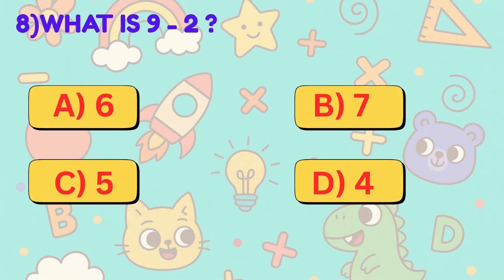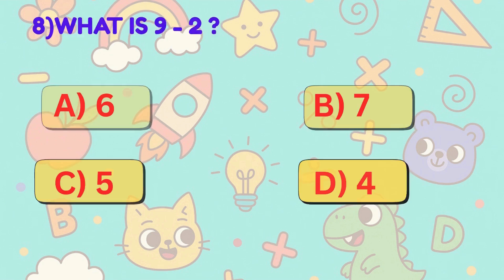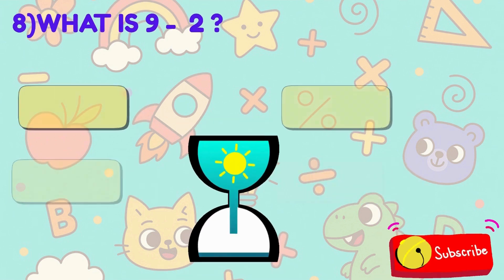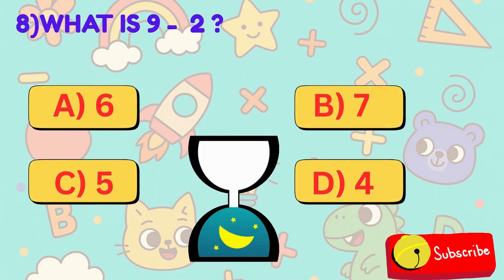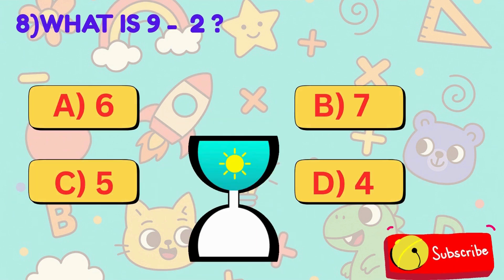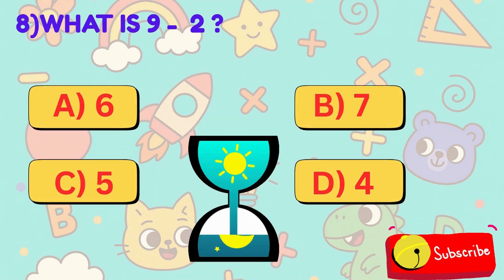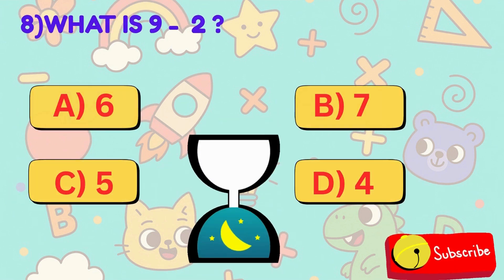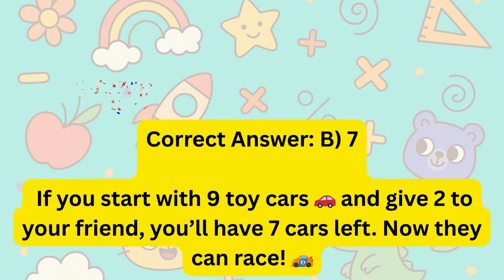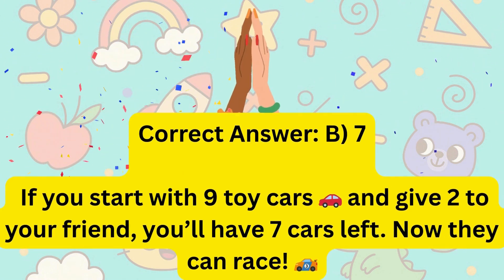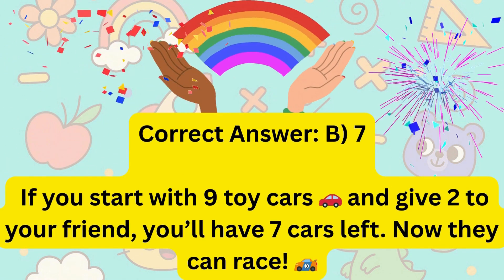8. What is 9 minus 2? Is it A, 6, B, 7, C, 5, or D, 4? Correct answer is B, 7.